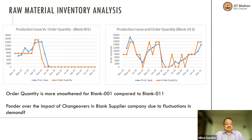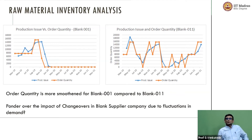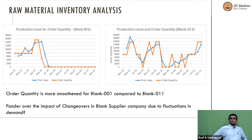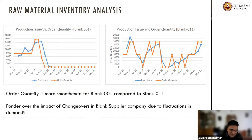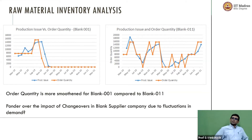Here we have presented the raw material inventory analysis for two of the blanks, blank 001 and blank 0011, just to see whether smoothing is occurring or not. You can see that the production amount — the number of blanks issued for production — is the blue line. The other line looks like it's smoothened out. Some smoothing has happened.